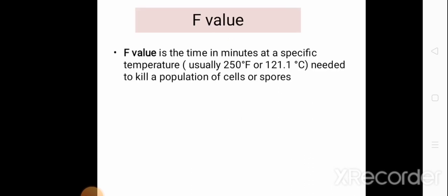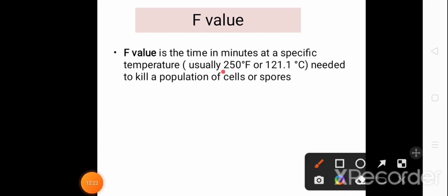Last of all, we will discuss the F value. The F value is the time in minutes at a specific temperature, usually 250 degrees Fahrenheit or 121 degrees centigrade, that is needed to kill a population of cells or spores.